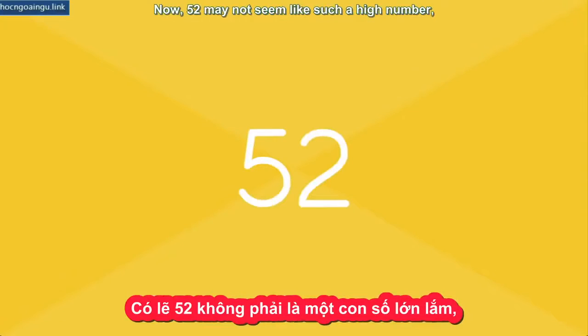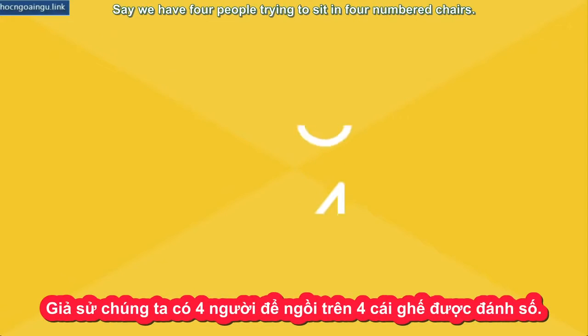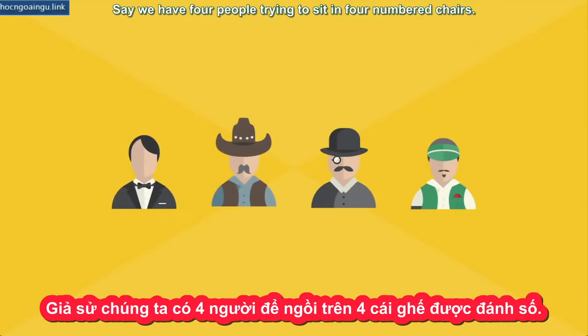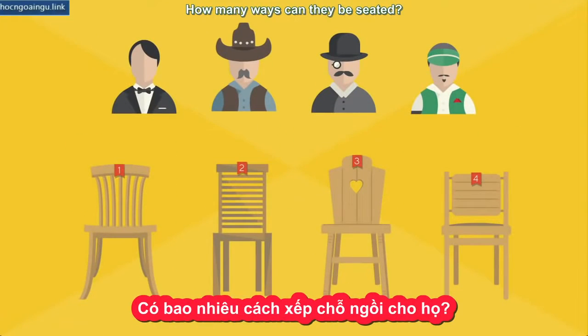Now, 52 may not seem like such a high number, but let's start with an even smaller one. Say we have four people trying to sit in four numbered chairs. How many ways can they be seated?